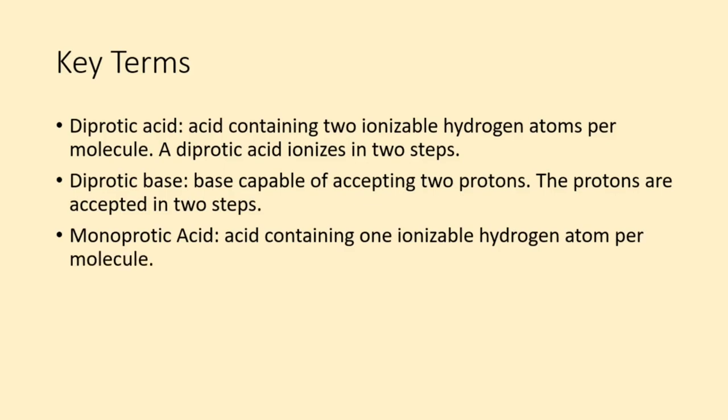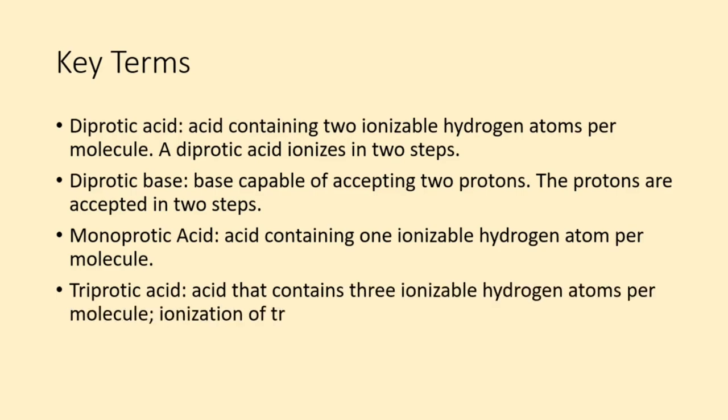Monoprotic acid, acid containing one ionizable hydrogen atom per molecule. Triprotic acid, acid that contains three ionizable hydrogen atoms per molecule. Ionization of triprotic acids occurs in three steps.